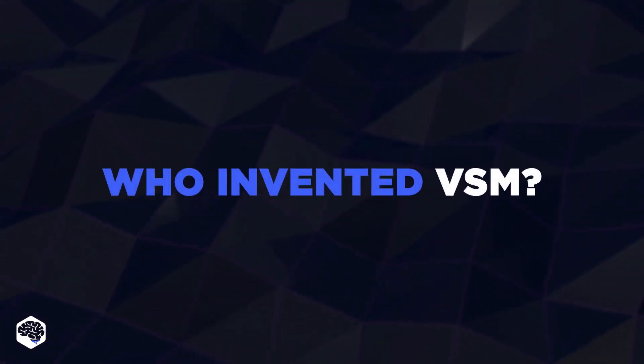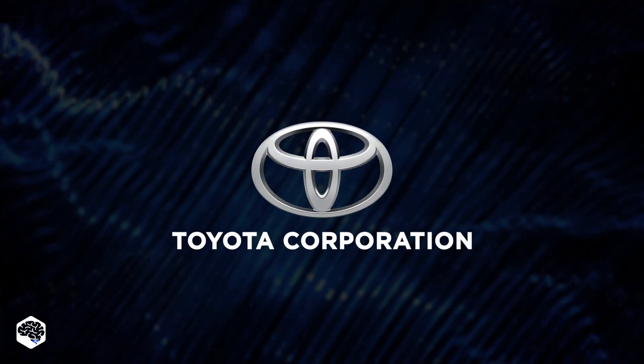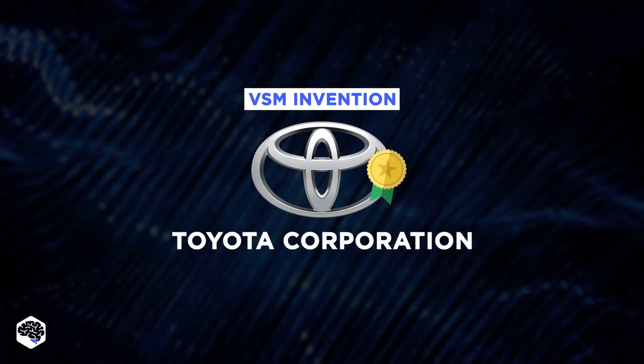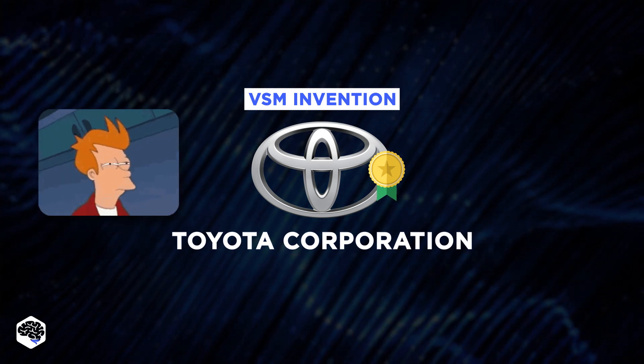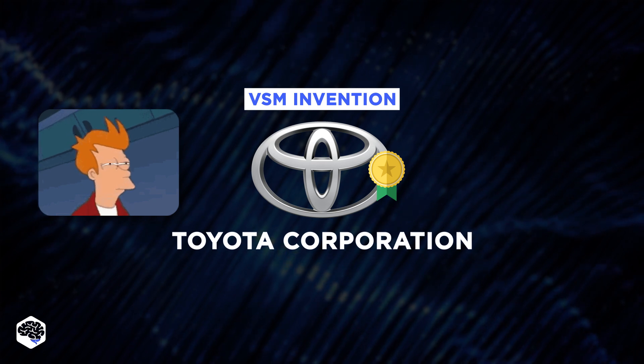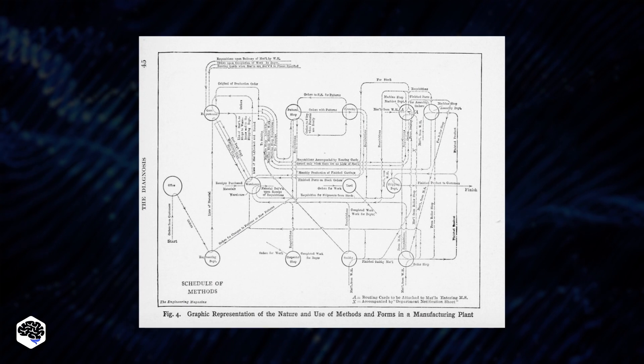This idea looks simple and seems to have been used for thousands of years. Well, almost. It's generally accepted that Toyota Corporation is a pioneer in this field. It's likely that before them, someone did use the method of value stream mapping, because similar designs can be seen in the book, Installing Efficiency Methods by Charles E. Knoeppel.